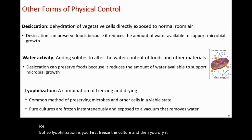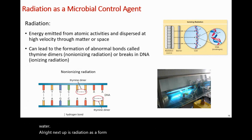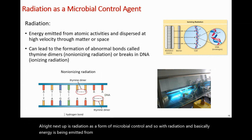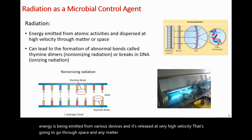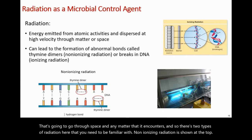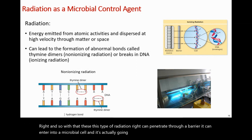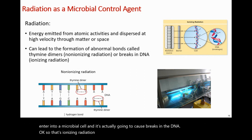Next up is radiation as a form of microbial control. With radiation, energy is emitted from various devices and released at very high velocity, passing through space and any matter it encounters. There are two types to be familiar with. Ionizing radiation can penetrate through a barrier, enter a microbial cell, and cause breaks in the DNA.